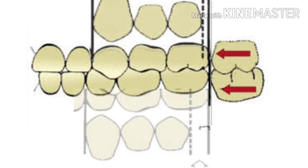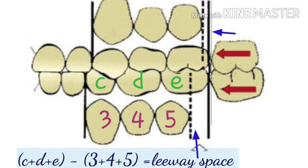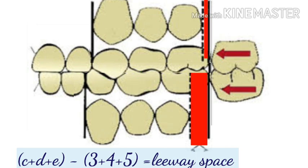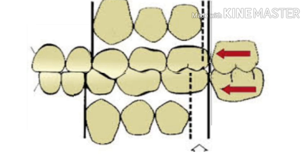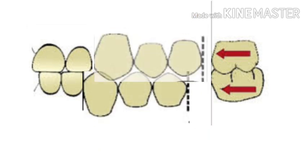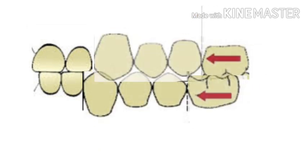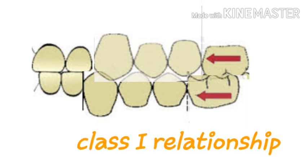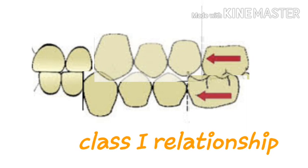The leeway space of Nance refers to the difference in the combined mesiodistal width of the permanent canine and premolars, which is usually less than that of the deciduous canine and molars. After the eruption of the premolars, the permanent first molar drifts mesially by utilizing this leeway space to establish a Class I molar relation.